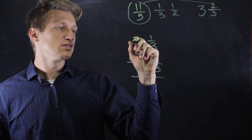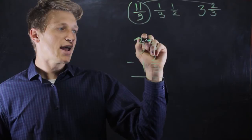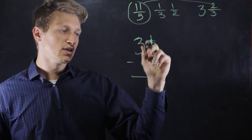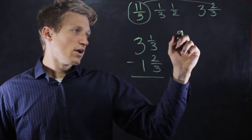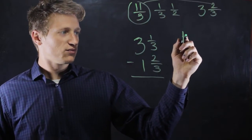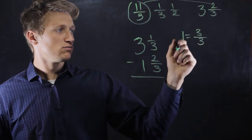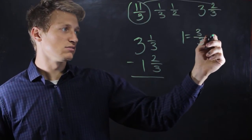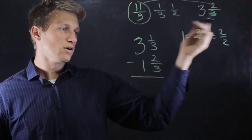So what we do is borrow from this whole number here and add it to this fraction so that we can easily subtract the fractions. So let's do that. If we borrow 1, we can write the 1 as a fraction, 3 over 3, because any whole number can be written as a fraction, or that could also equal 2 over 2, and so on.